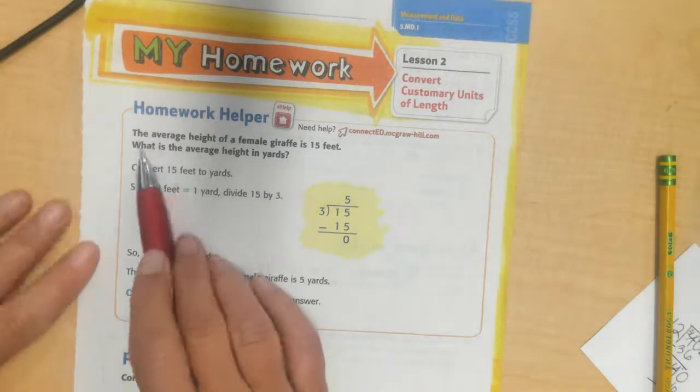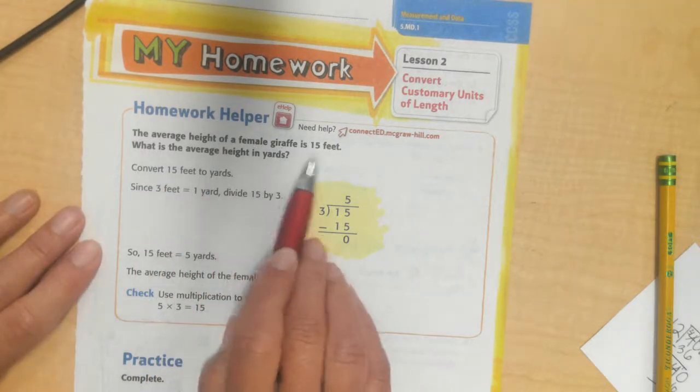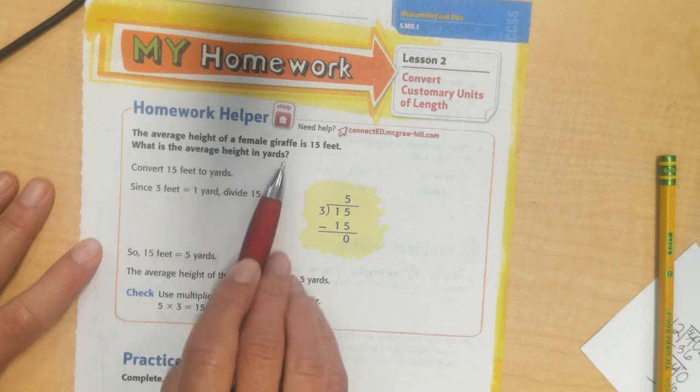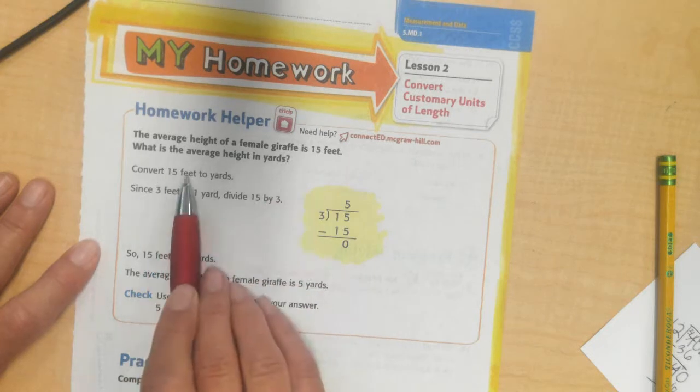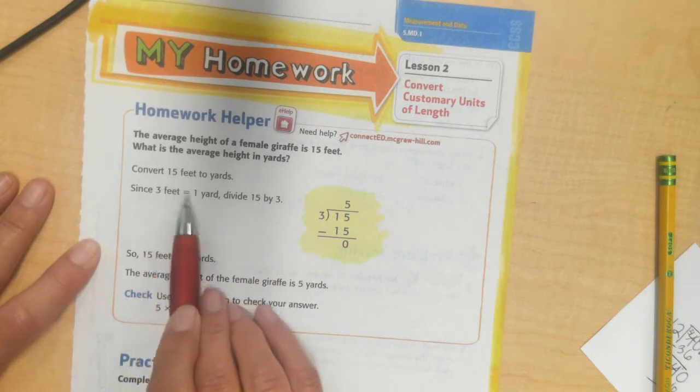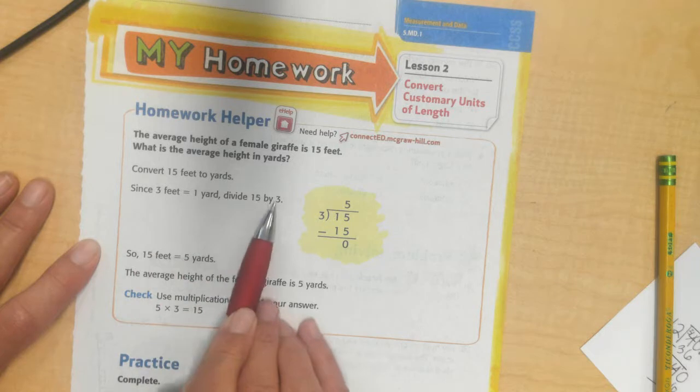The average height of a female giraffe is 15 feet. What is the average height in yards? I know there are 3 feet in 1 yard, so I'm going to convert 15 feet to yards. Since 3 feet equals 1 yard, I'm going to divide 15 by 3.